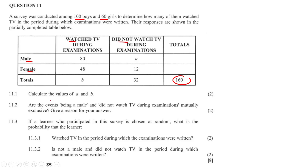Calculate the values of A and B. To get the value of A, it's just 32 minus 12, so A is equal to 20. To get the value of B, that's 80 plus 48, so B is equal to 128.